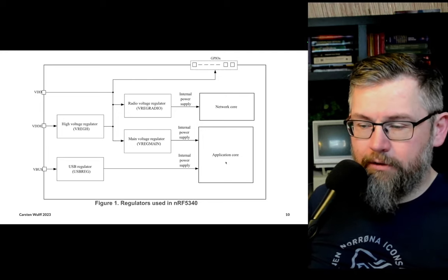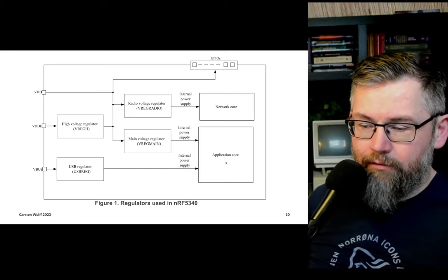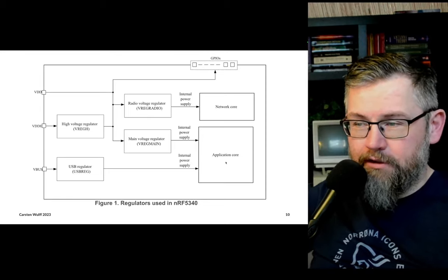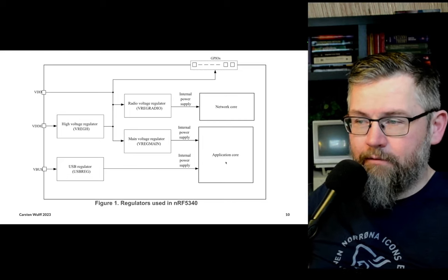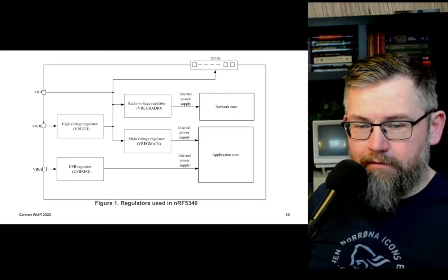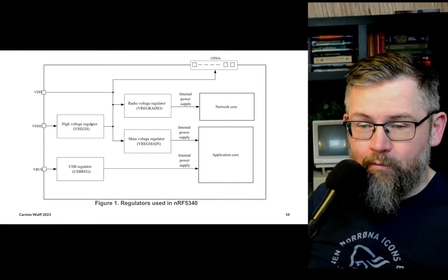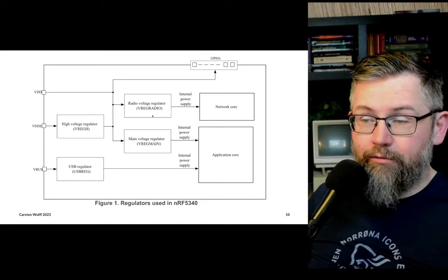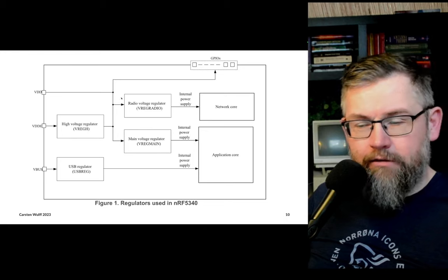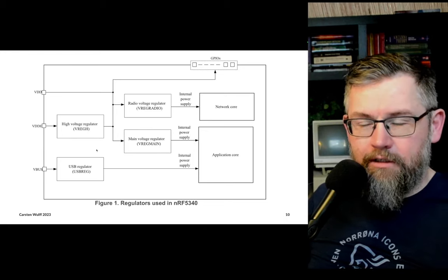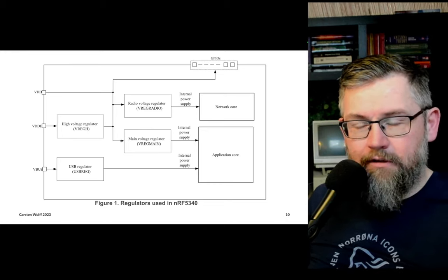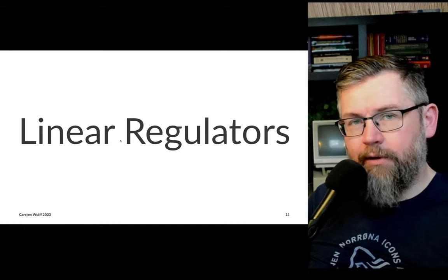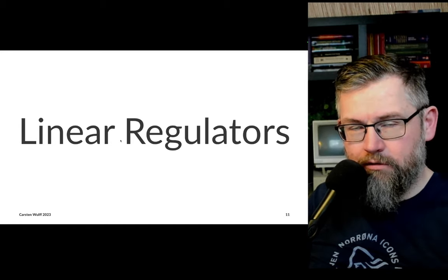If you look inside a typical chip — the nRF5340 — copied directly from the product specification, you can see multiple supplies: VBUS, VDD, VDH, and VDDIO. For the different supplies there are a high voltage regulator, a radio regulator, a main voltage regulator, and a complex state machine to control all this, because it depends on what happens in the system.